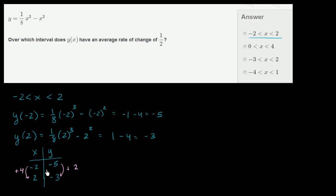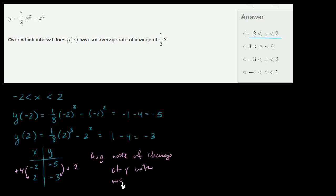You could just look at it — the y increased from that point to that point, x increased from that point to that point. Or you could say negative 3 minus negative 5 is positive 2; that's the difference. And 2 minus negative 2 gives you positive 4 for the change in x. When x increased by 4, y increased by 2. So the average rate of change of y with respect to x is equal to — when x changed by positive 4, y changed by positive 2 — so it's equal to 1/2.